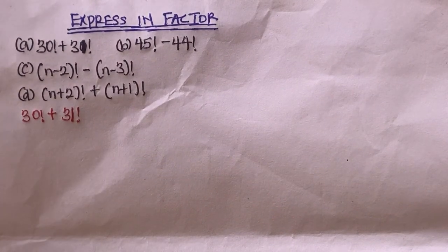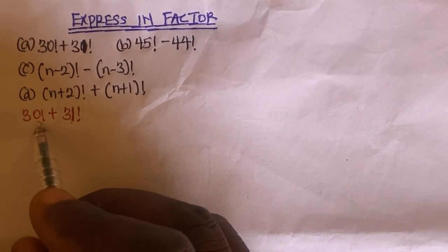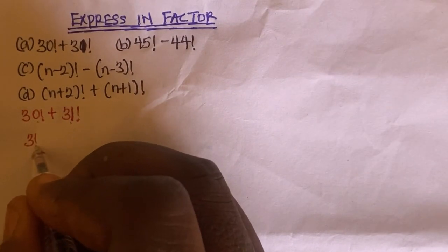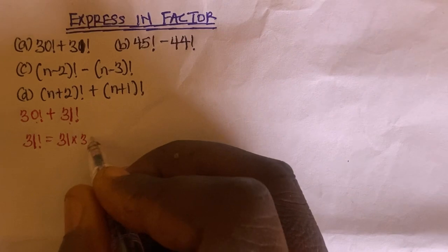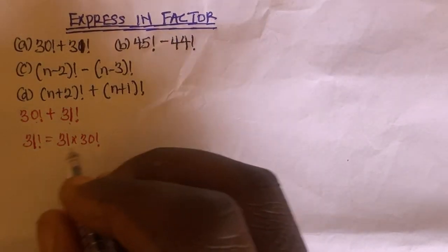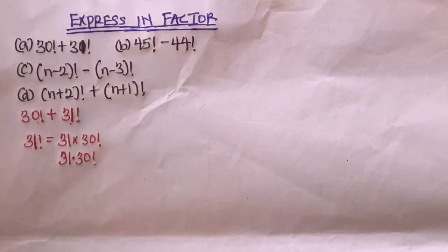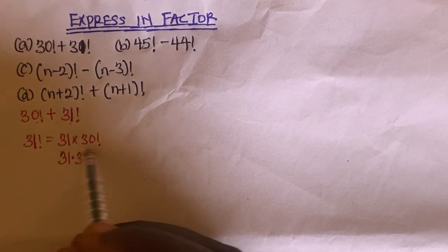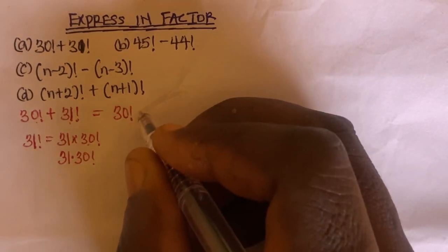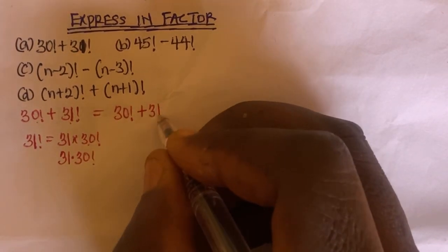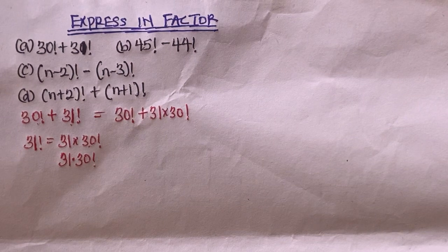What we are going to do is: since 31 is greater than 30, we can express 31 factorial as 31 times 30 factorial. So we can rewrite the expression as 30 factorial plus 31 times 30 factorial. Now, what is the common factor here?